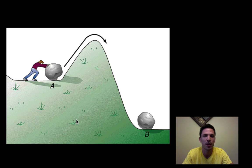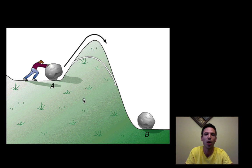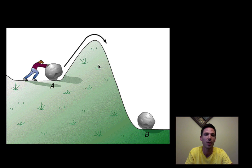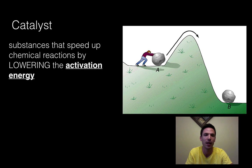Stop and think about this: what is something we could do to this scenario to make it happen quicker — to get from A to B faster? Well, what if we take the hill and make it a bit shorter? In other words, we lower the activation energy. By doing that, we can get from point A to point B a lot quicker. And that's really what it comes down to when we talk about enzymes or this term catalyst. A catalyst is any substance or molecule that speeds up chemical reactions by lowering the activation energy. If we lower the energy required for the chemical reaction, we can get it to happen a lot quicker.